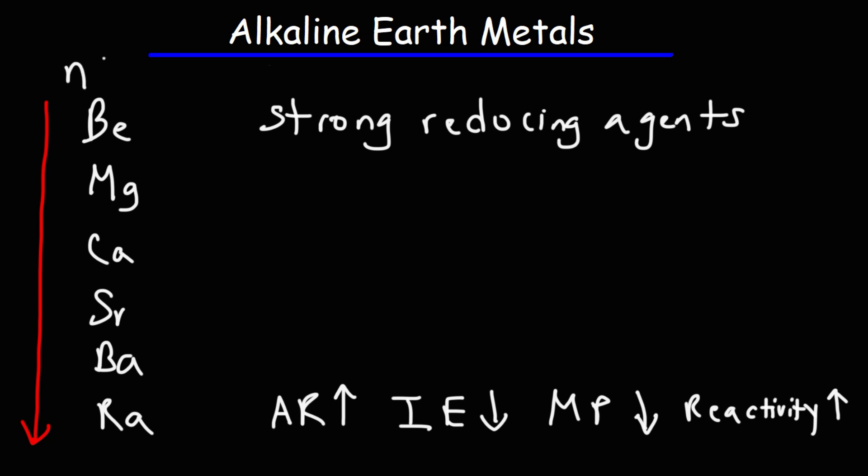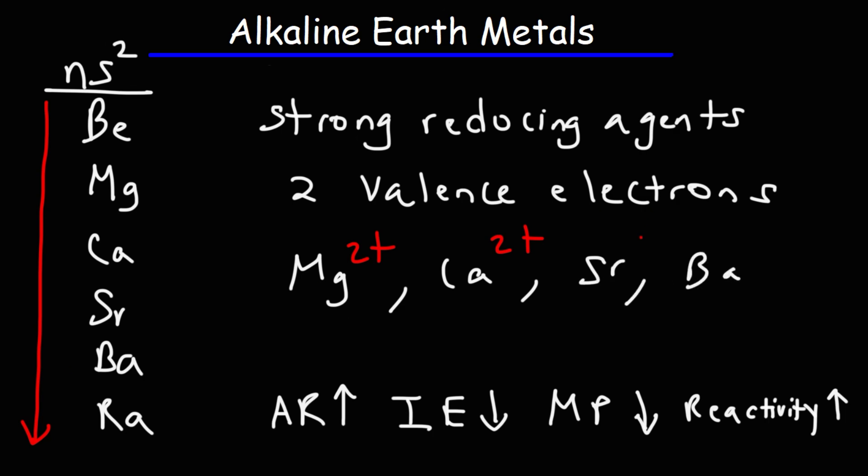Now the alkaline earth metals end in the configuration NS2. All of them have two valence electrons. And when they give up those two valence electrons in a chemical reaction, they will form ions with a 2+ charge. Think of Mg 2+, or calcium in its ionic form has a 2+ charge. The same is true for strontium and barium. This is all because they have two valence electrons that they want to give away.